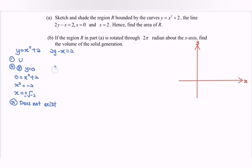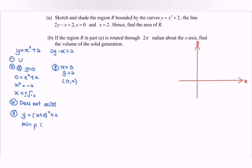For the y-intercept, when x = 0, y = 2, giving coordinate (0, 2). The standard form is y = (x + 0)² + 2, so we have a minimum point at (0, 2) and a symmetrical axis at x = 0.